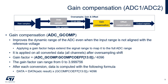The ADC1-ADC2 gain compensation feature applies a gain factor to the raw samples to improve the dynamic range. The gain factor is applied after oversampling, is programmable in the range of 0 to almost 4, and can be adjusted in 0.025% steps.